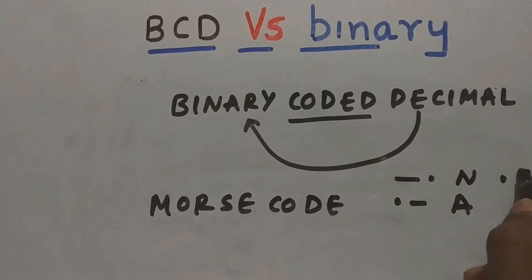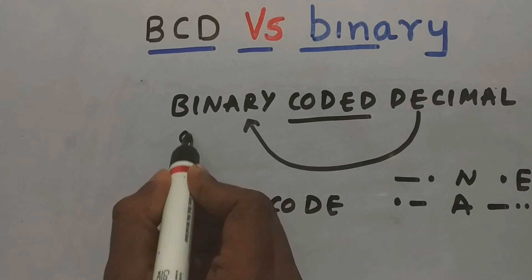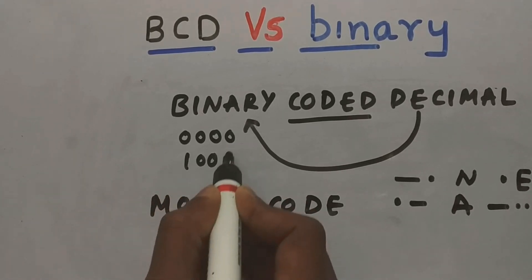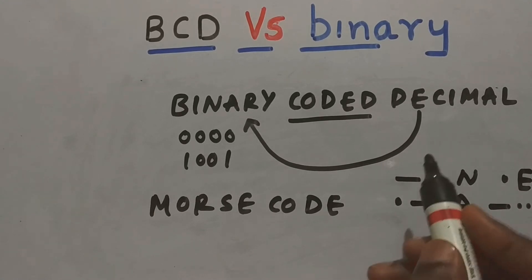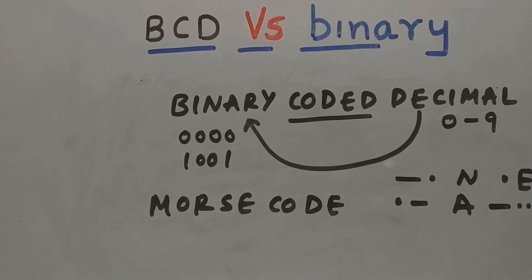Dot is represented as alphabet E. And dash and dot dot is represented as alphabet B. So we have different combinations of dashes and dots to represent our alphabets. Similarly, we have a binary code. That means we have from 0000 to 1001 to represent our decimal digits from 0 to 9.